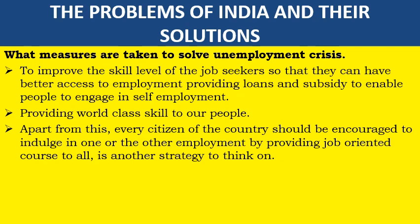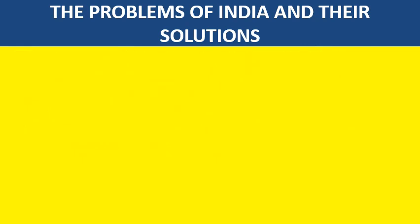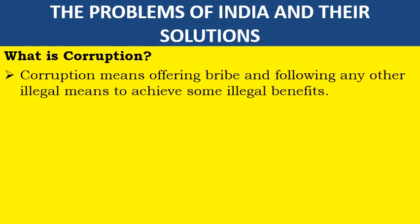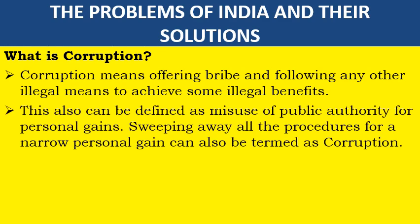Apart from this, every citizen of the country should be encouraged to indulge in one or the other employment by providing job-oriented courses to all people. What is corruption? Corruption means offering bribes and following any other illegal means to achieve some illegal benefits. This can also be defined as misuse of public authority for personal gains. Sweeping away all the procedures for narrow personal gain can also be called corruption.